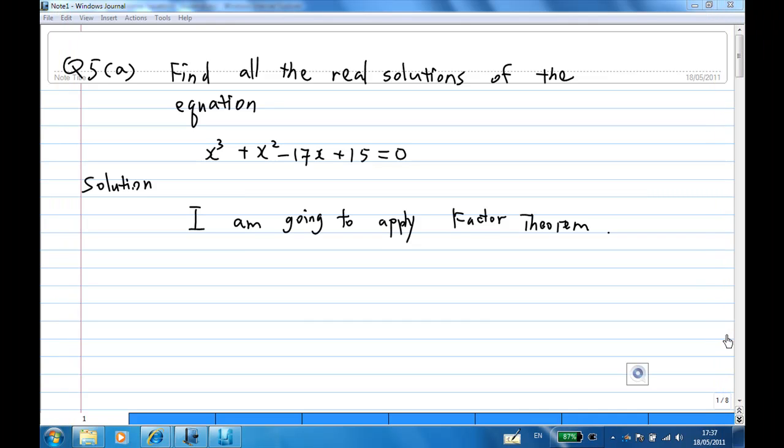Hi, this is a recording to show you how to apply Factor Theorem to solve a polynomial equation. Our problem is find all the real solutions of the equation x cubed plus x squared minus 17x plus 15 equal to 0. I am going to apply Factor Theorem.